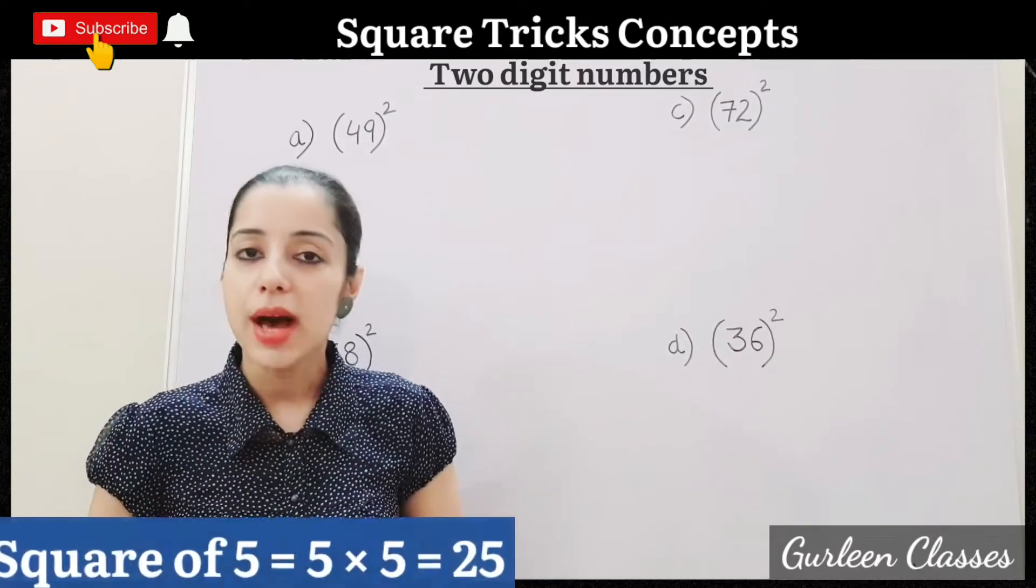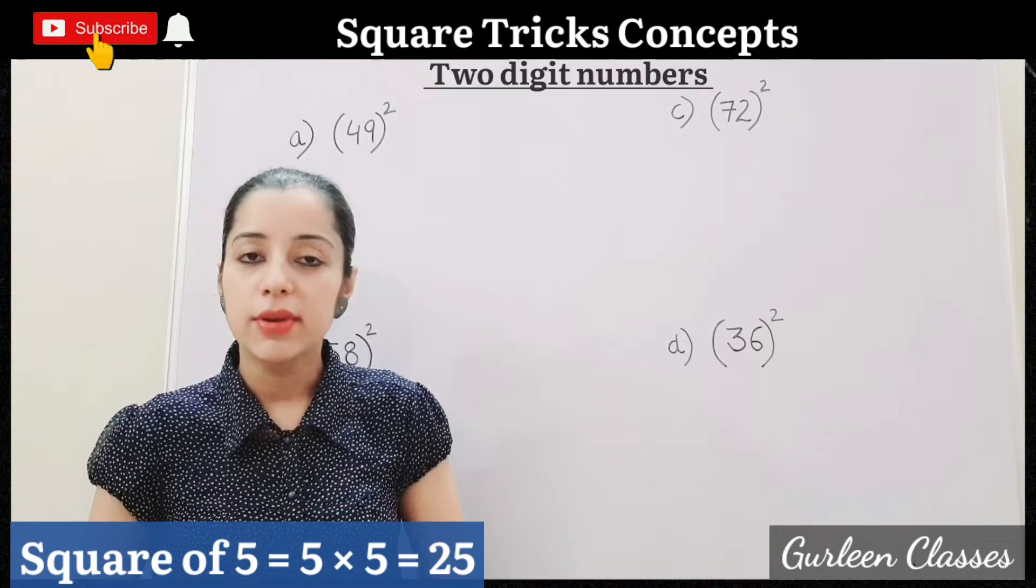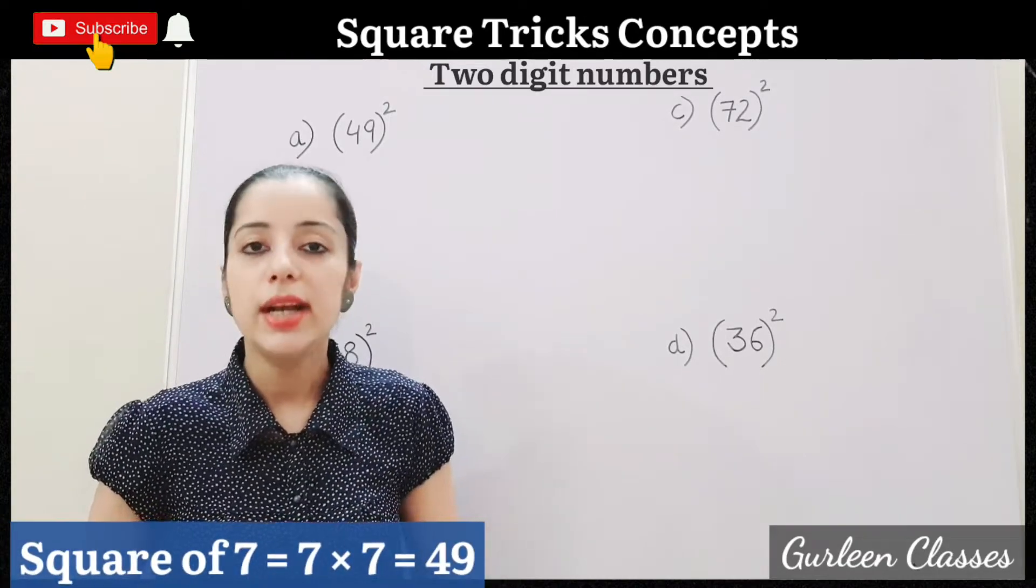If you have to find out square of 5, 5 into 5, 25. Square of 7, 7 into 7, 49.